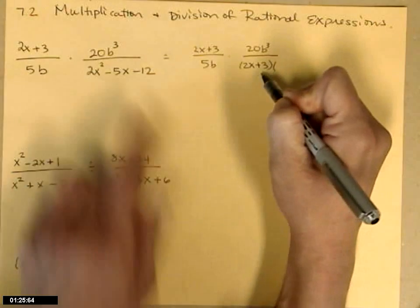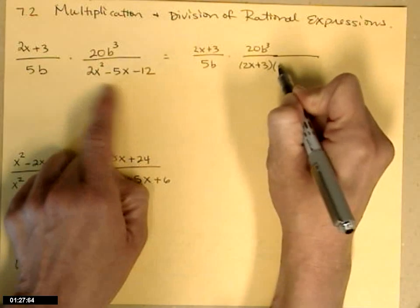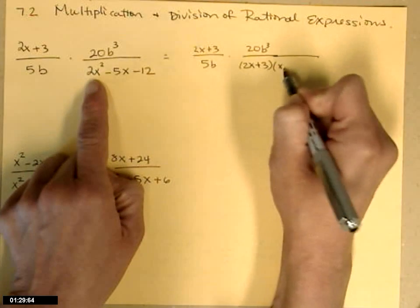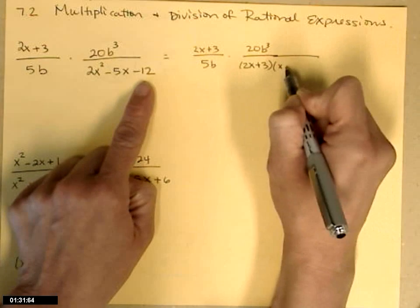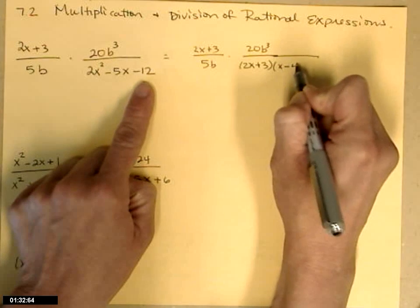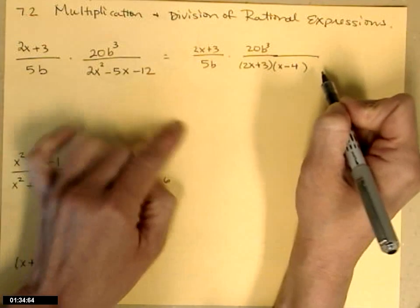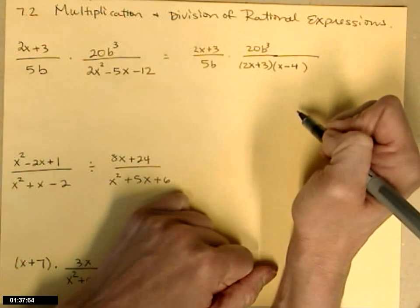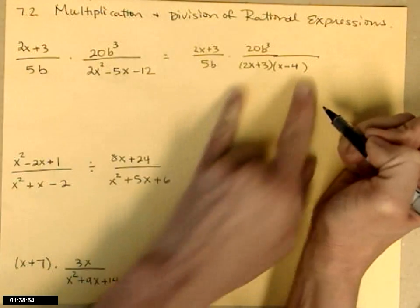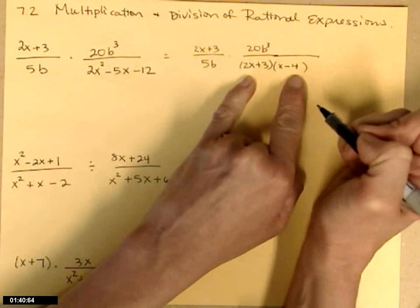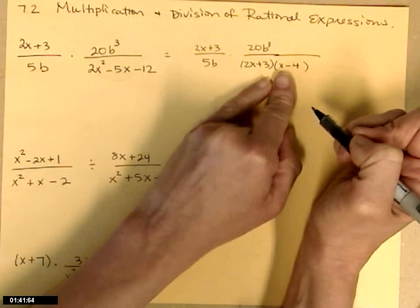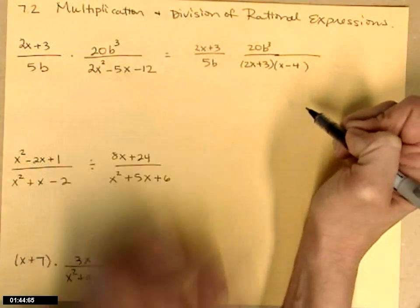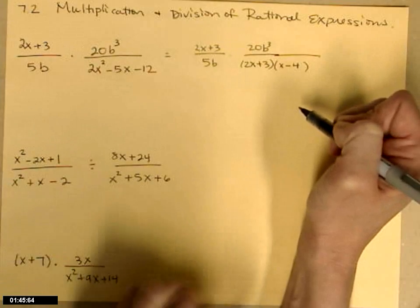If 2x plus 3 is one of the factors, its partner would have to be an x to get the 2x squared, and a minus 4 to get the negative 12. Now I'm going to check and make sure that those two together give me that negative 5. So I get negative 8x plus 3x, which is in fact negative 5x — so that's good.